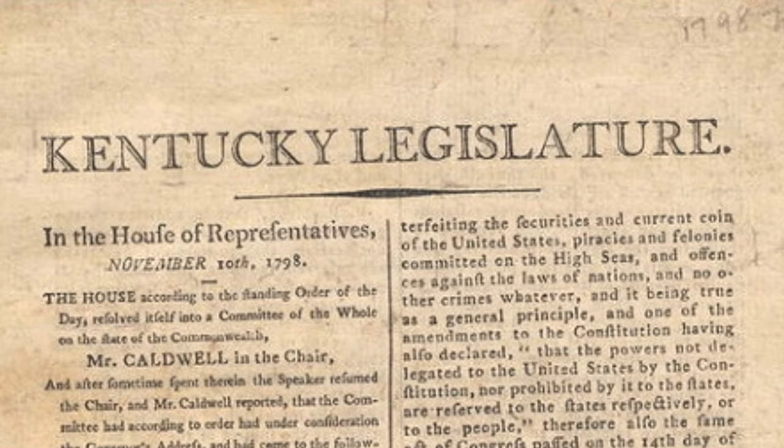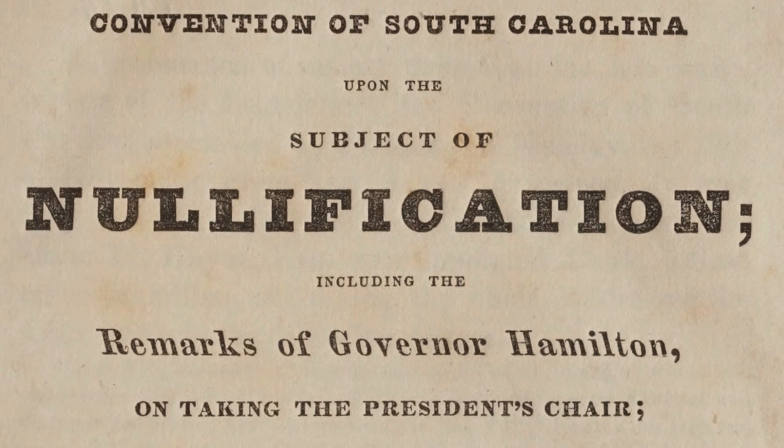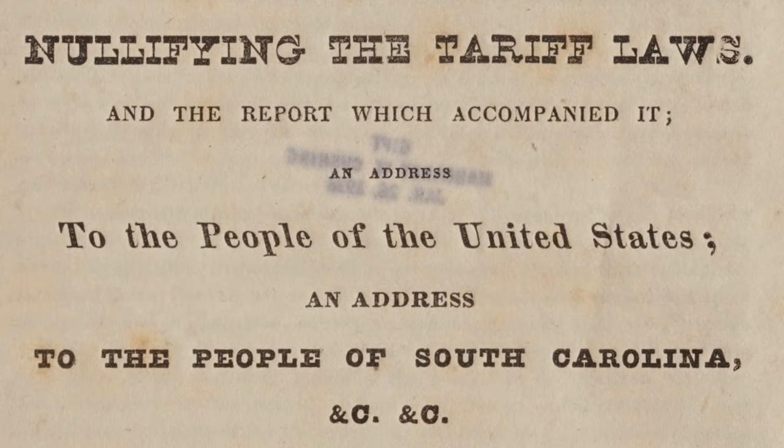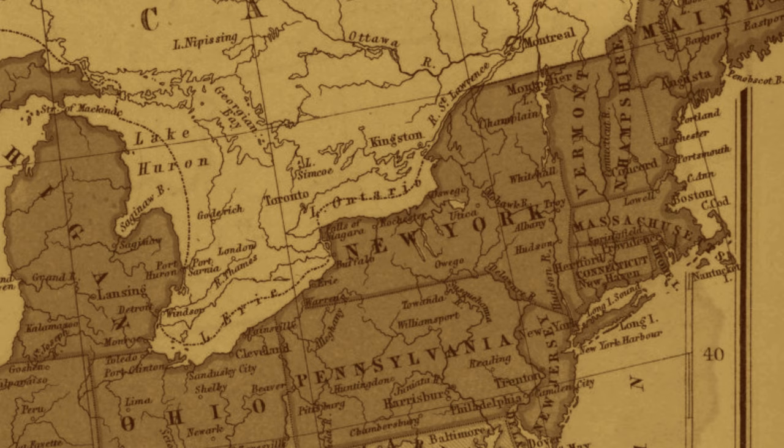In 1832, Calhoun returned to South Carolina and helped draft the Ordinance of Nullification, which declared that South Carolina and all states had the right to declare any and all tariffs as null and void.